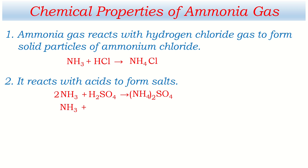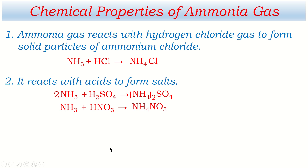Ammonia also reacts with nitric acid to form ammonium nitrate, NH4NO3. Ammonium has valency 1 and nitrate has valency 1 — equal valency, so no exchange. This is a balanced chemical equation: Oxygen 3 = Oxygen 3, Nitrogen 1 + 1 = 2 each side, Hydrogen 4 = 3 + 1 = 4.